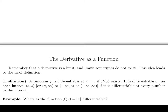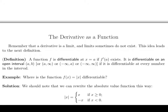Let's use this idea now to try to answer the question about where the function f of x equals absolute value of x is differentiable. We can rewrite the absolute value of x: it equals just x as long as x is positive or zero. If the number inside the absolute value is negative, then to drop the absolute value, you have to introduce a minus sign.